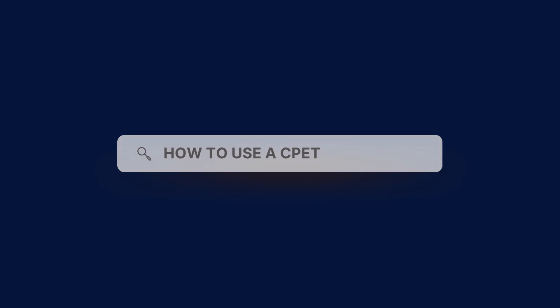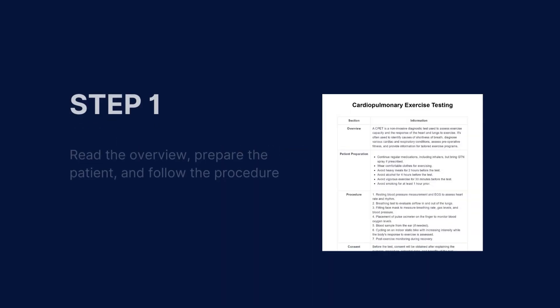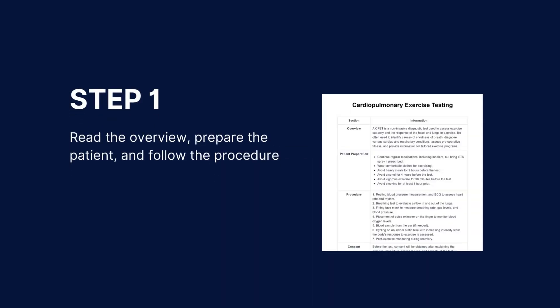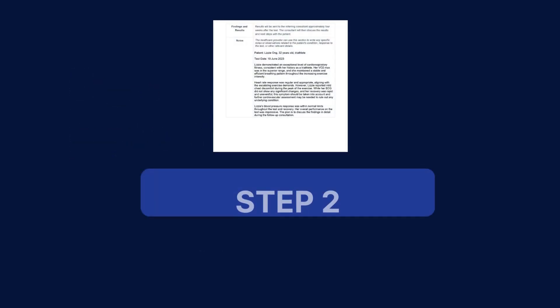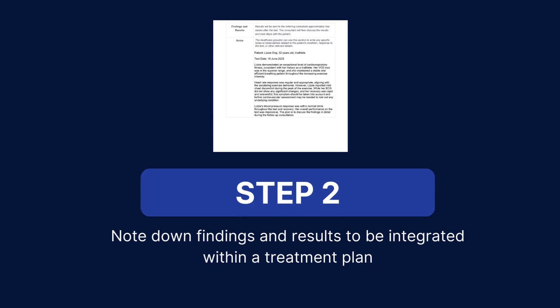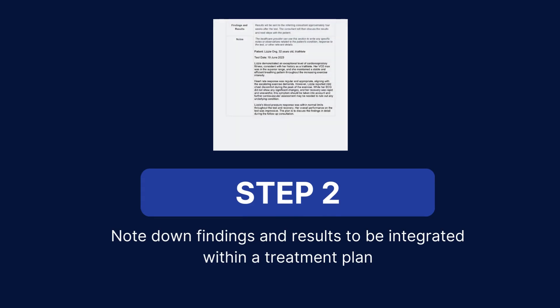Here's how to use a CPET. The first step is to read the overview, prepare the patient, and then follow the procedure as listed on the document. You'll then need to note down the findings and results, which will then be integrated within the treatment plan.